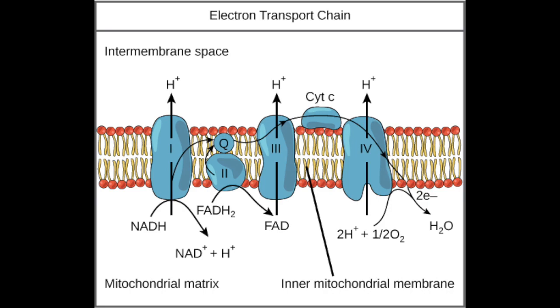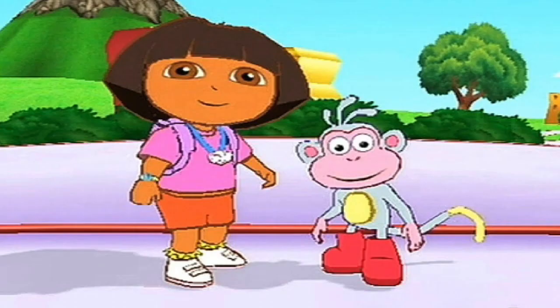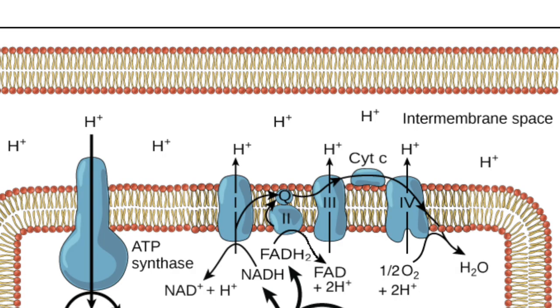Anyway, the hydrogen ions get sucked up by the proteins in what is known as an oxidation reaction, and this releases a metric buttload of energy. The energy is used to pump hydrogen ions from the mitochondrial matrix to the mitochondrial membrane and into the intermembrane space. That's called active transport, baby.